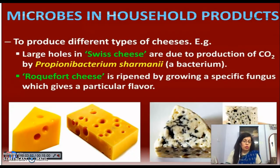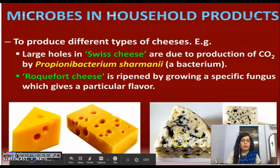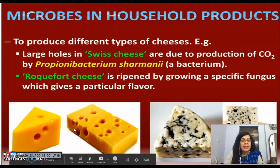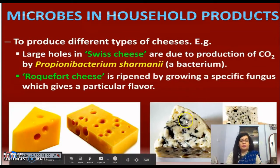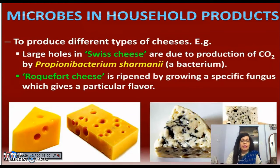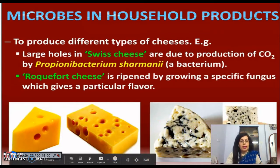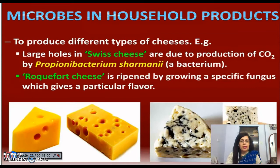If you talk about cheese, you can see big holes here — this is called Swiss cheese. In Swiss cheese, Propionibacterium shermanii is added. When it respires, carbon dioxide is produced, making it soft with holes. Then we have Roquefort cheese, which grows a specific fungus that gives it various flavors. These are all household products made using microorganisms.